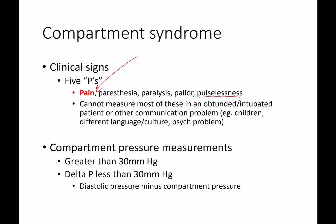Keep in mind that you can't measure a lot of these clinical signs in an obtunded or intubated patient, or someone who can't communicate with you properly. Children are a good example, as is an intubated patient who can't communicate and tell you if there's pain, or can't hear you and understand you if you're asking them to move their fingers or toes. You also can't assess numbness in these patients.